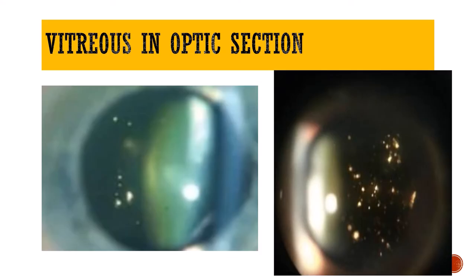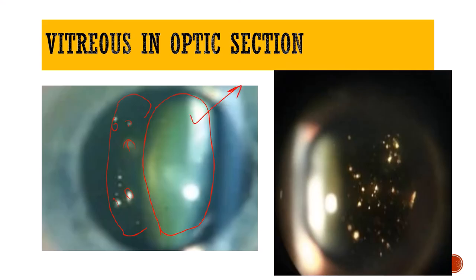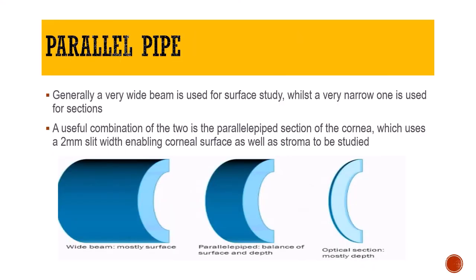The optical section can also give information about the vitreous, specifically the anterior part. To focus on the anterior vitreous, move the joystick even further inside toward the patient. You will see a section behind the lens — that is the vitreous — and you can see opacities in the anterior vitreous. When focusing on the cornea, the lens may not be clear; when taking an optical section of the lens, the vitreous may not be clear — you focus directly on one structure at a time. These refractile glistening particles in the vitreous represent asteroid hyalosis.